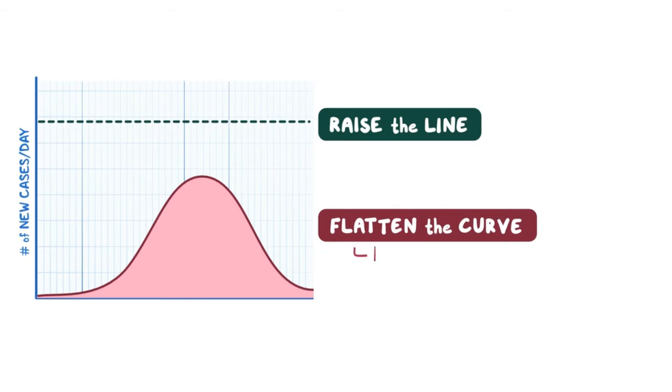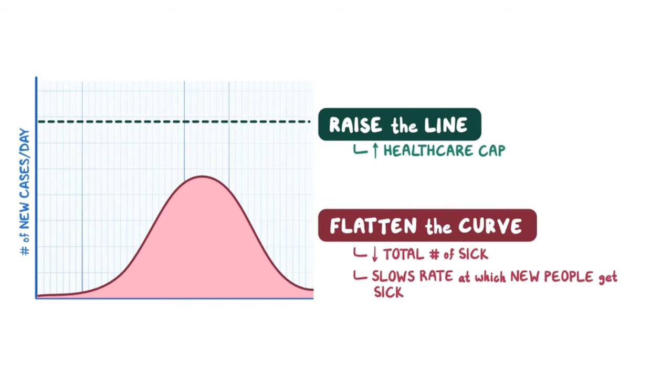Flattening the curve is focused on diminishing the total number of people that get sick and slows down the rate at which new people get sick, while raising the line helps to actually increase healthcare capacity. Let's take a look at how different countries apply these two strategies, starting with China, the first country to deal with COVID-19.